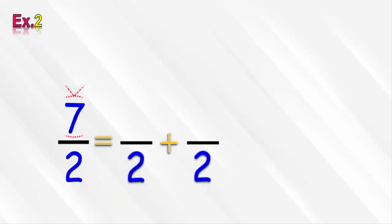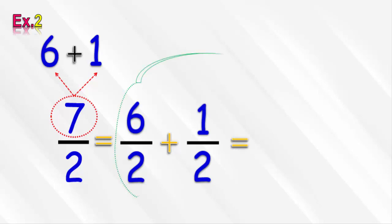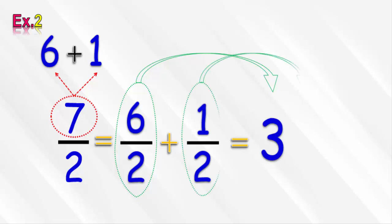Then we write the numerator 7 in the form of a sum of two numbers, one of them divisible by 2, as 6 plus 1. Then we write 6 in the numerator of the first fraction and 1 in the numerator of the second fraction. Then we put the fraction 6 over 2 in the form of the whole number 3, and write the fraction 1 over 2 beside the whole number. So the equivalent mixed number is 3 and a half.